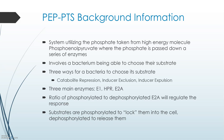The ratio of phosphorylated to dephosphorylated E2A regulates the response — we'll discuss more on when E2A is phosphorylated versus dephosphorylated. Substrates are phosphorylated to lock them into the cell and dephosphorylated to release them. Getting a substrate phosphorylated is the goal of the PTS, so that the cell can utilize it.